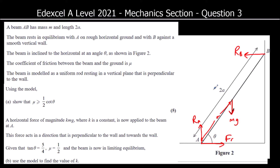We need to use the model to show that mu is greater than or equal to half cot theta. Friction isn't necessarily taking its maximum value, so it's less than or equal to mu R. Friction's maximum value is mu R — that's only if it's moving or in limiting equilibrium. It just says it's in equilibrium, so friction only takes the value it needs to resist the motion.